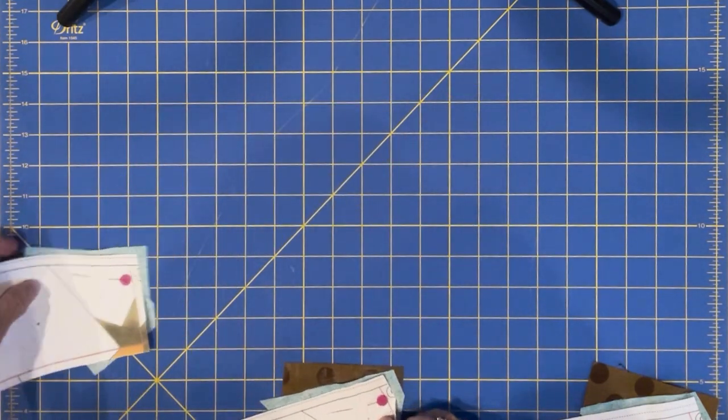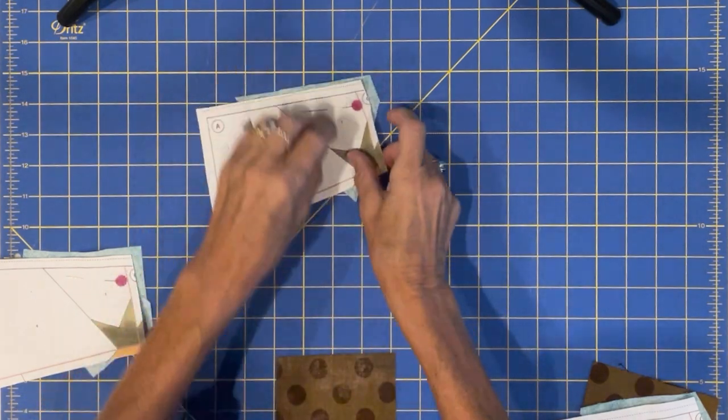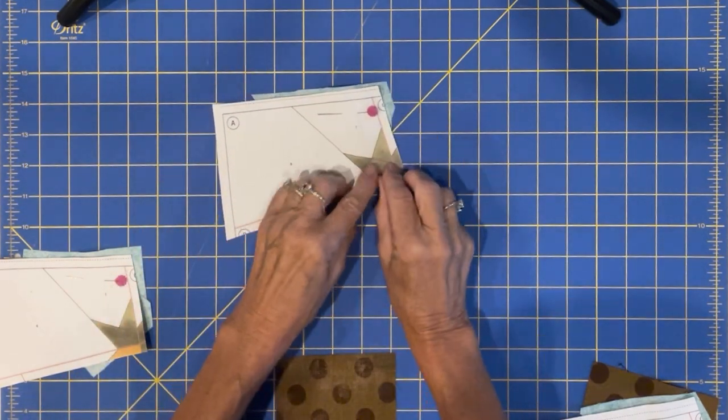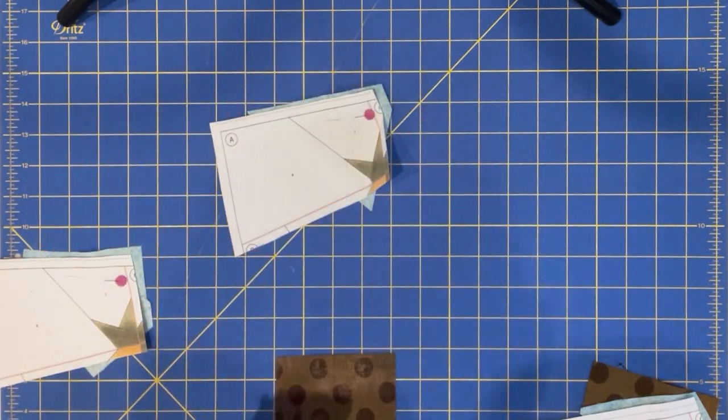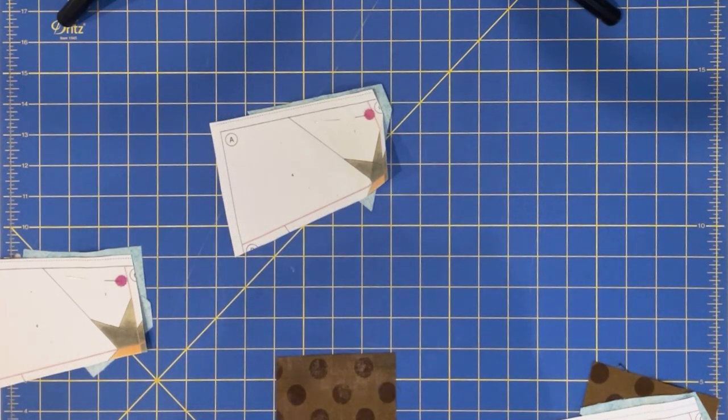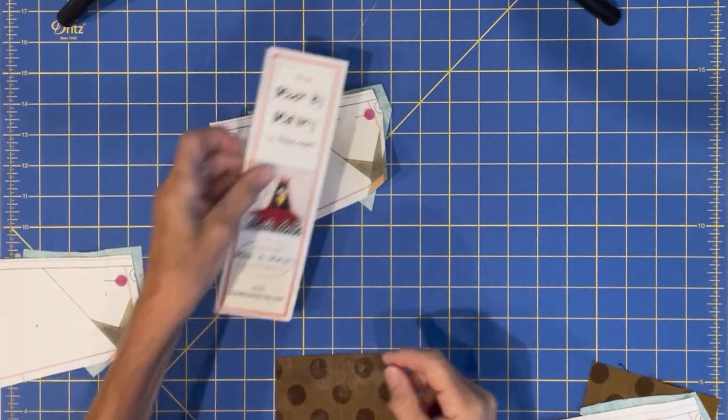Now I'm ready to do piece two and that is this little tiny triangle right there. So I am going to take any straight edge. I like to use a bookmark.